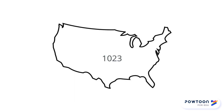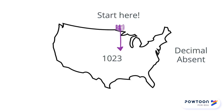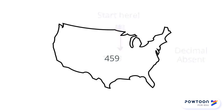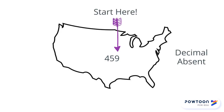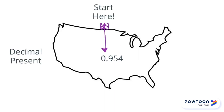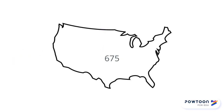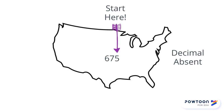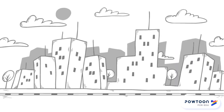1,023 — decimal absent, start on the Atlantic side. 459 — decimal absent, start on the Atlantic side. 0.954 — decimal present, start on the Pacific side. 675 — decimal absent, start on the Atlantic side.